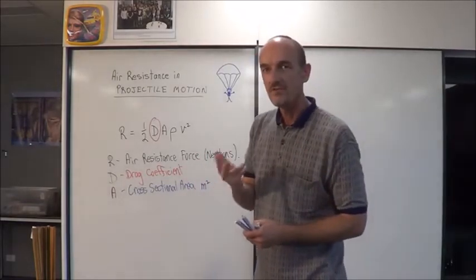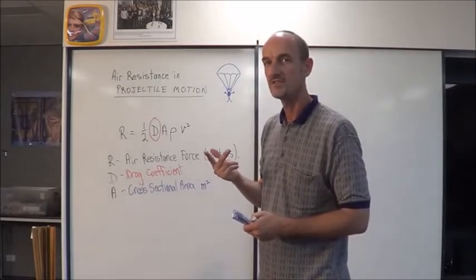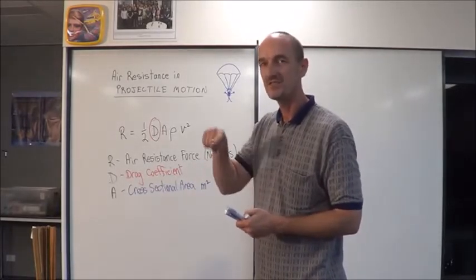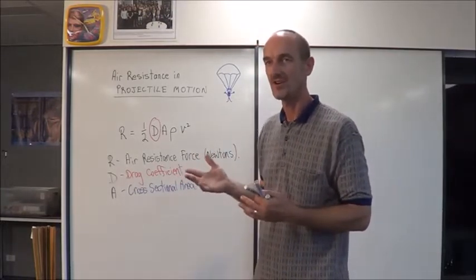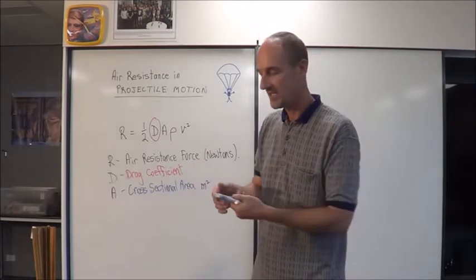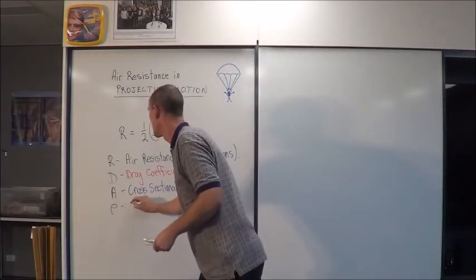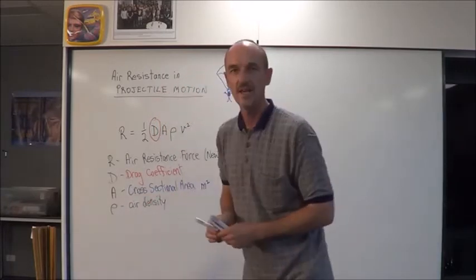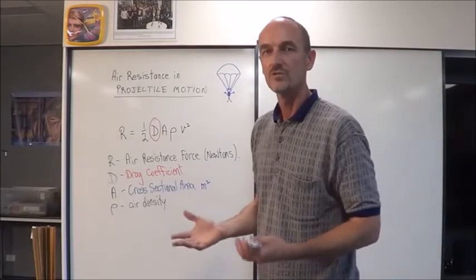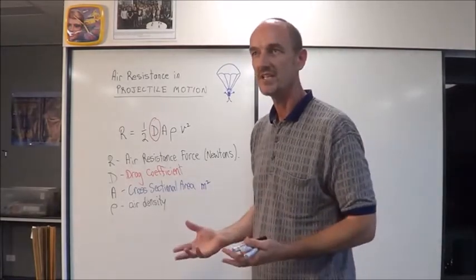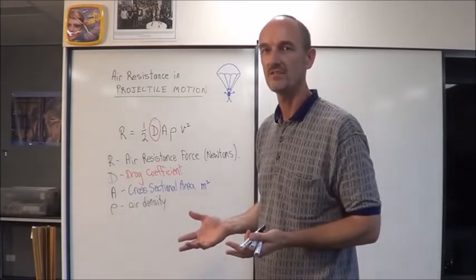The third value that affects air resistance is known as the air density. It's given the symbol rho, which is a Greek letter ρ. Air density is affected by all sorts of factors, including the humidity of the air. So if it's very moist, then air resistance will be affected.